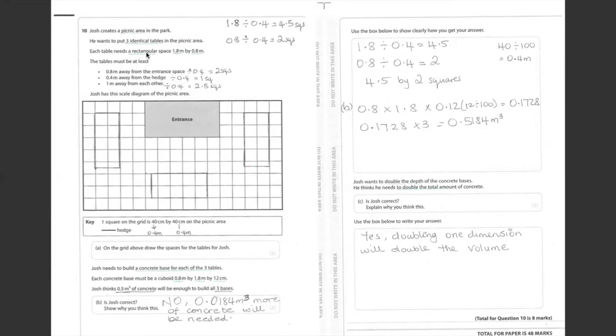So if we divide 1.8 meters by 0.4, we get 4.5 squares. 0.8 divided by 0.4 gives us two squares. So that is going to be the area of the rectangular space.